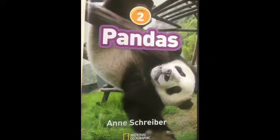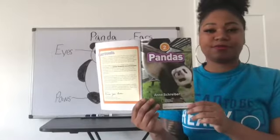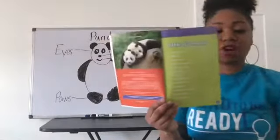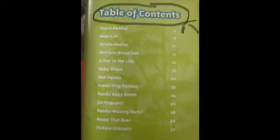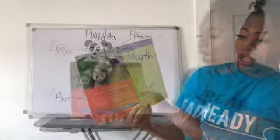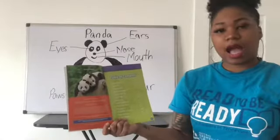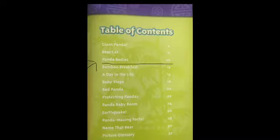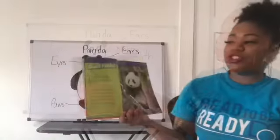We have our title page, which includes the title of the book — Pandas — as well as our author's name, Shriever. Now we have our table of contents, which is very important. It's normally one of the first pages in the book and it lists each section and tells what page it starts on. For example, if I wanted to read about panda bodies, I'd look in the table of contents, find 'Panda Bodies,' and it says page six — so I can go there and read all about panda bodies.